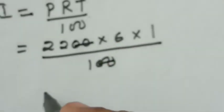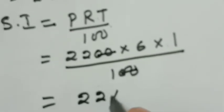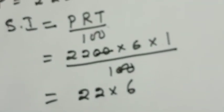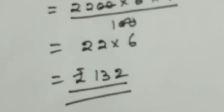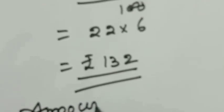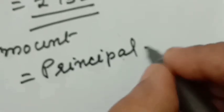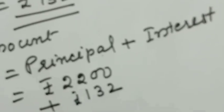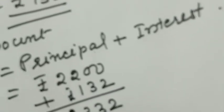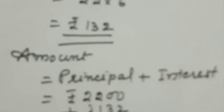Applying the formula, Simple Interest equals 2200 into 6 into 1 divided by 100. Cancelling the zeros, we get 22 into 6 which equals 132. Now you have to find out the Amount. Amount equals Principal plus Interest, that is 2200 plus 132 equals 2332. I hope everybody understood this problem. Clear, children?